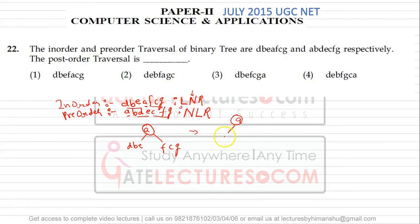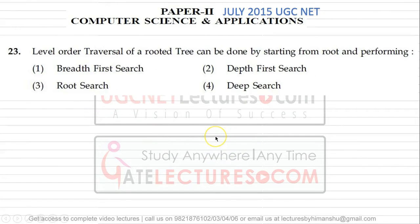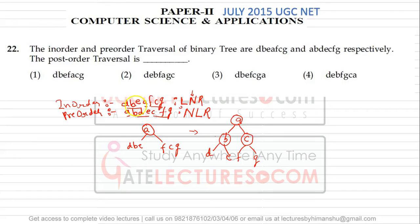So next is B, then left child is D and right child is E. Then we have parent C, then F, then G. You can always find the left child, right child, and parent according to these traversals. In-order traversal says D, B, E is the left child, A is the root, and F, C, G is the right child, because the root is in the middle. Everything left to A is left child, everything right to A is right child.